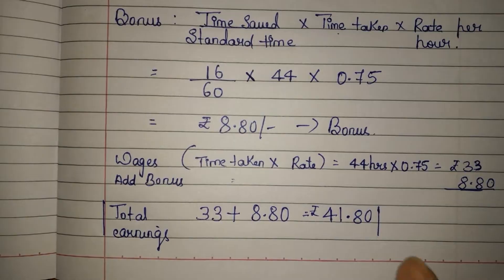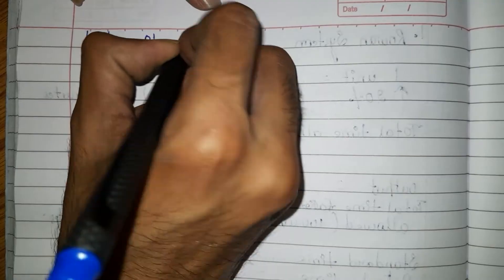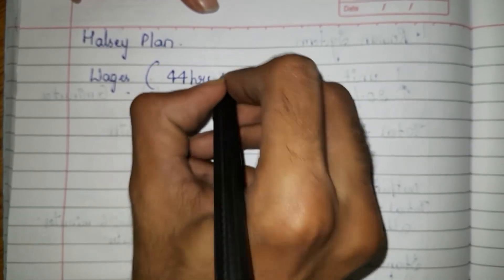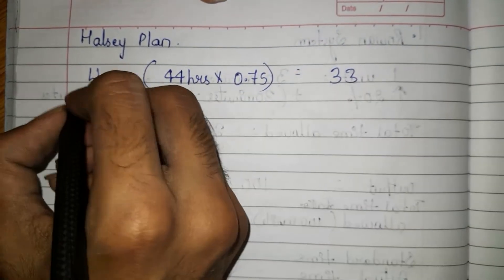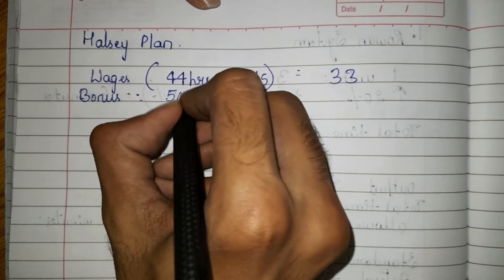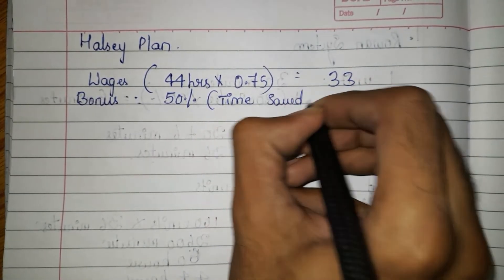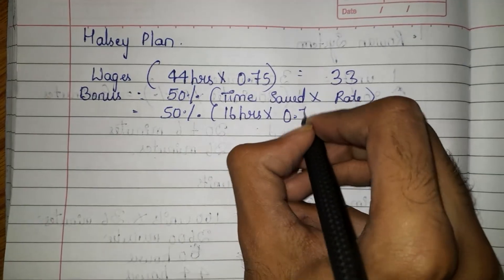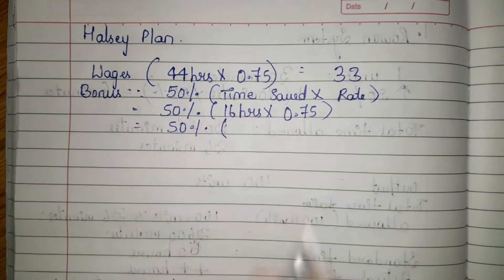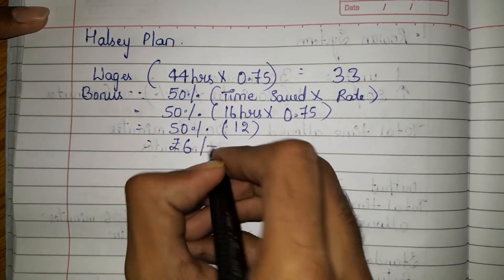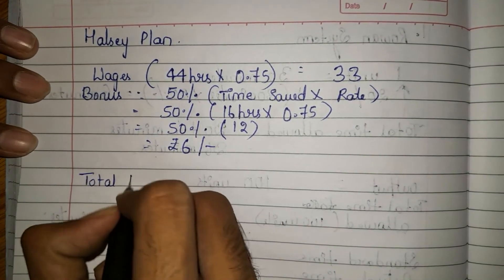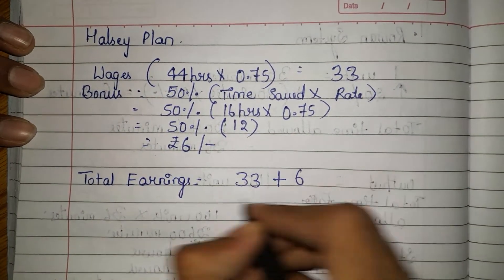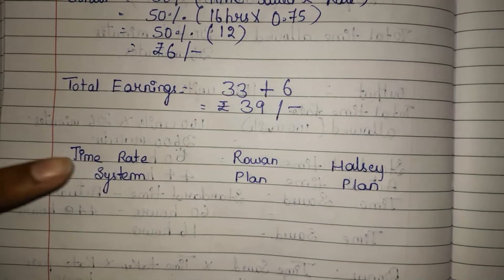Next we need to do Halsey plan. For Halsey plan, wages is time taken into rate: 44 hours into 0.75 gives 33 rupees, plus bonus. Bonus is 50% of time saved into rate — 50% of 16 hours into 0.75. That is 50% of 12, which is 6 rupees. So total earnings under Halsey plan is 33 plus 6 rupees, which equals 39 rupees.